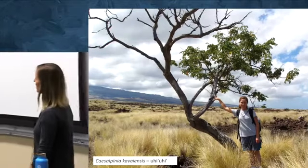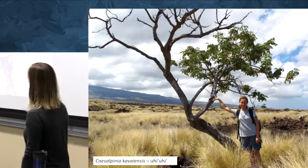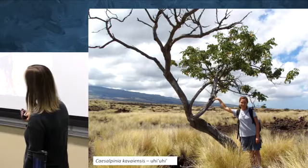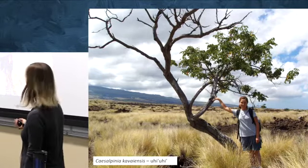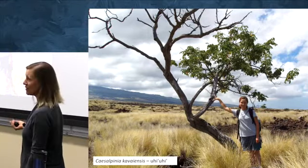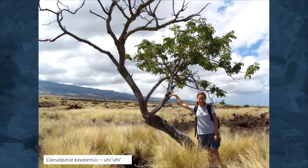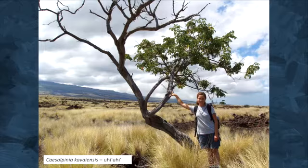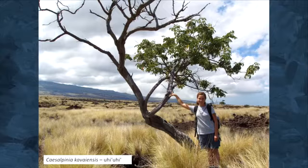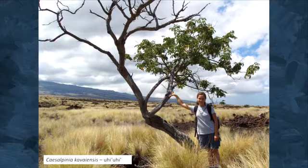Plants can also have big impacts on native biodiversity. This is a picture from one of my field sites on the leeward side of Hawaii's Big Island. This individual is a really rare endemic plant in the Fabaceae — a nitrogen fixer called uhi uhi. At the time of this photo there were seven individuals in the wild; it's now extinct in the wild. It was unable to recruit because of this massive fountain grass, a C4 grass introduced from South Africa that shades out any native seedlings.